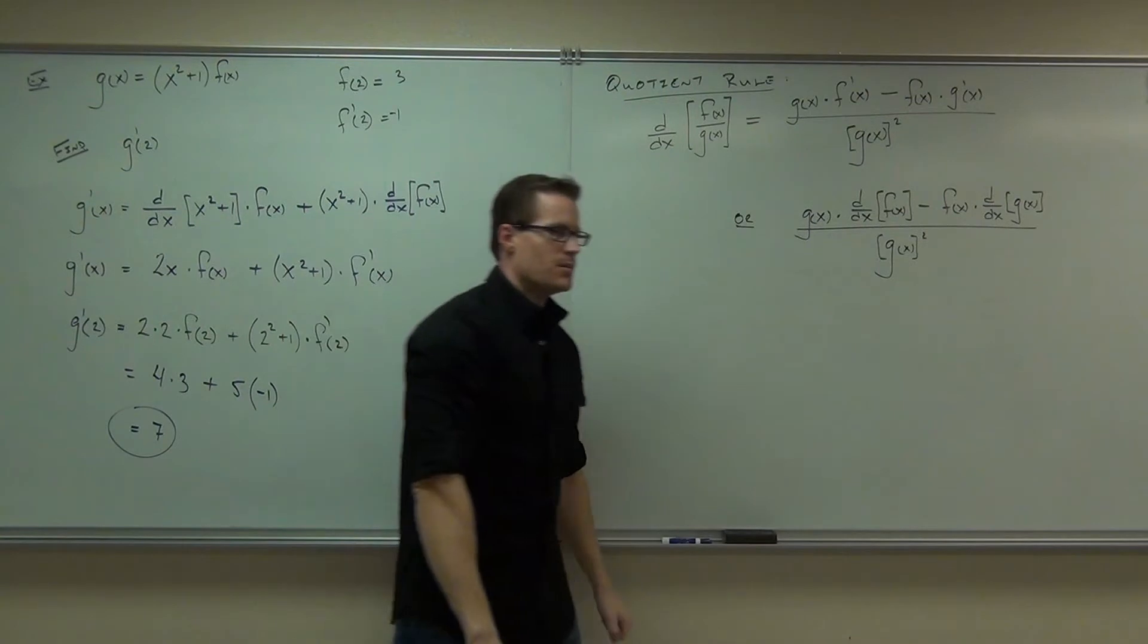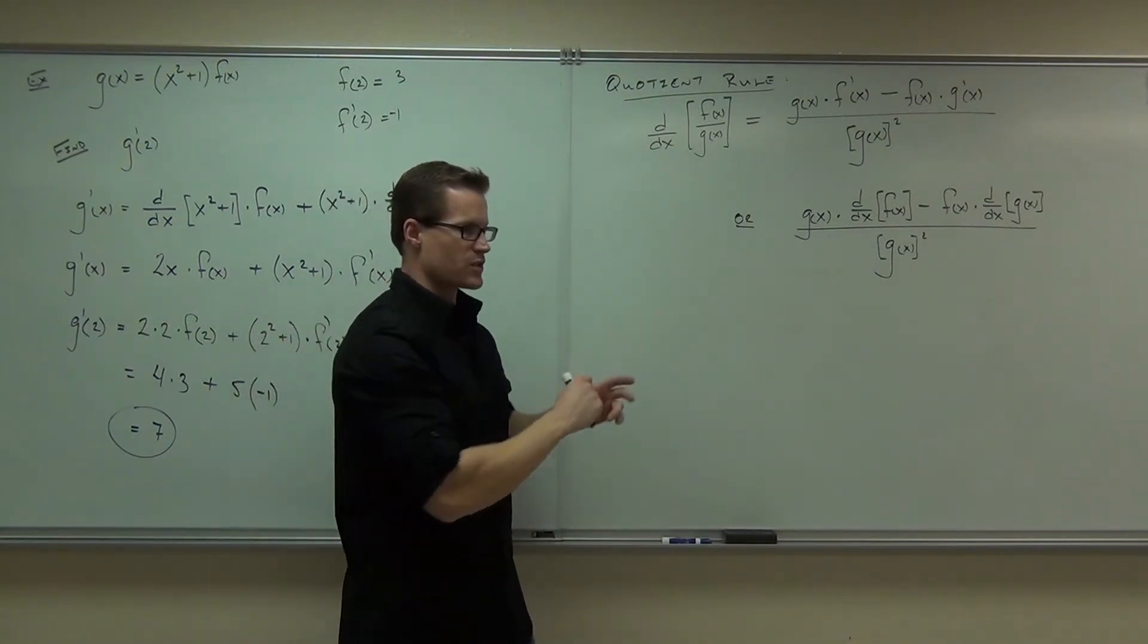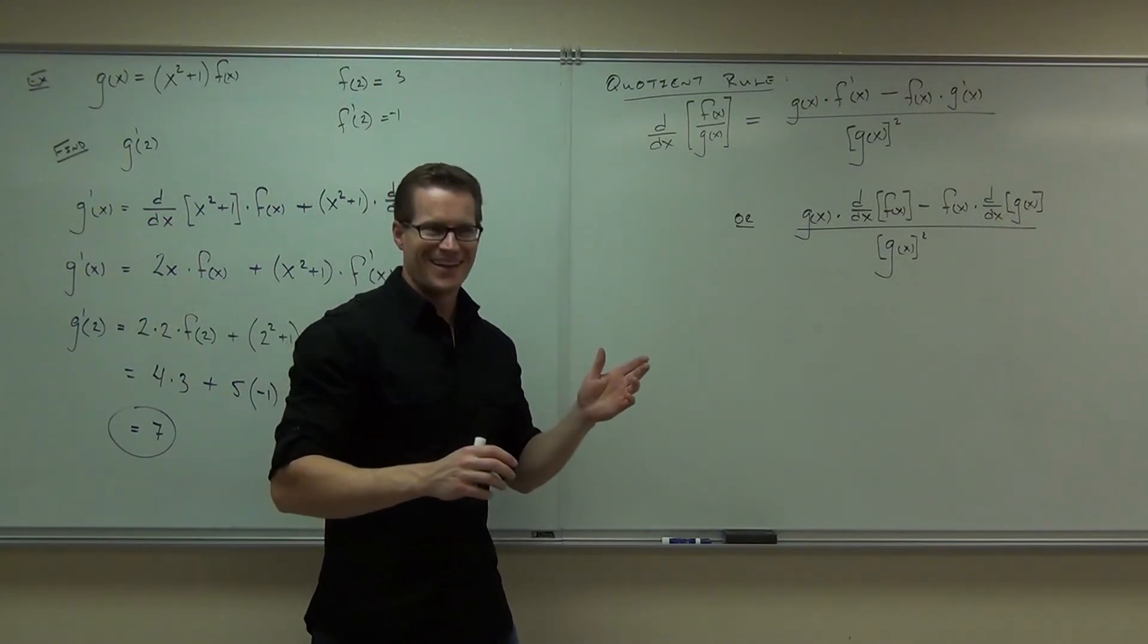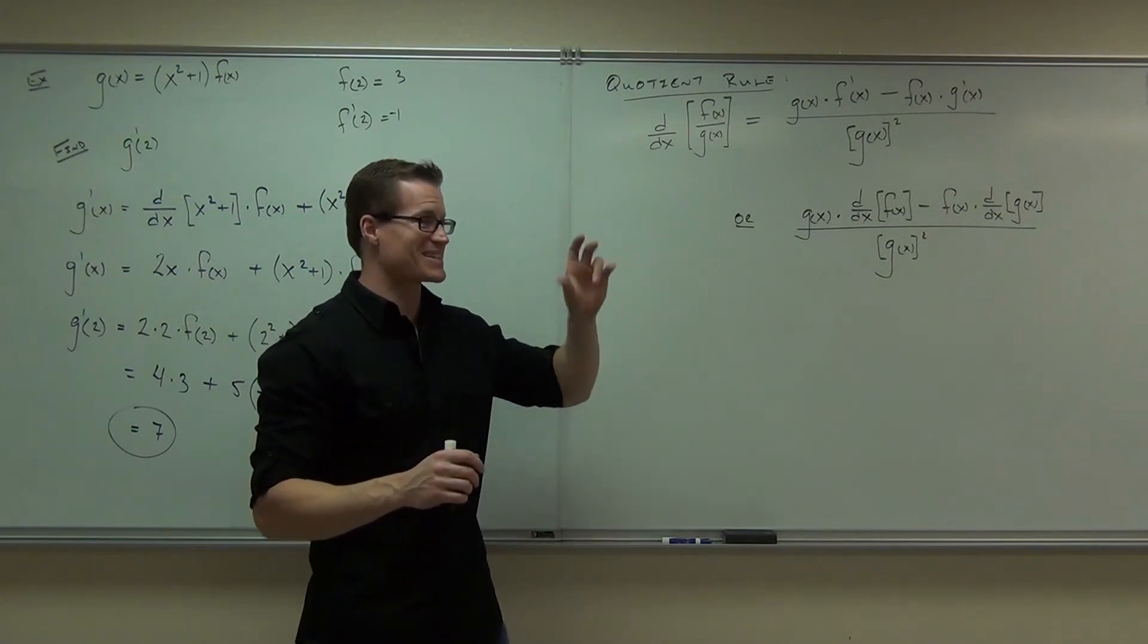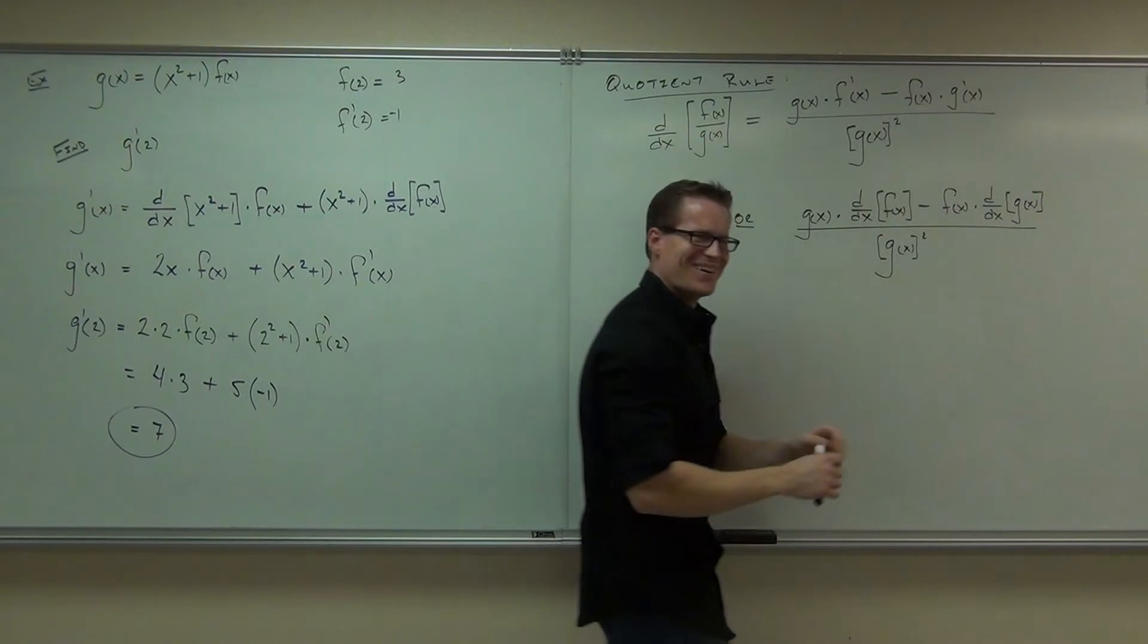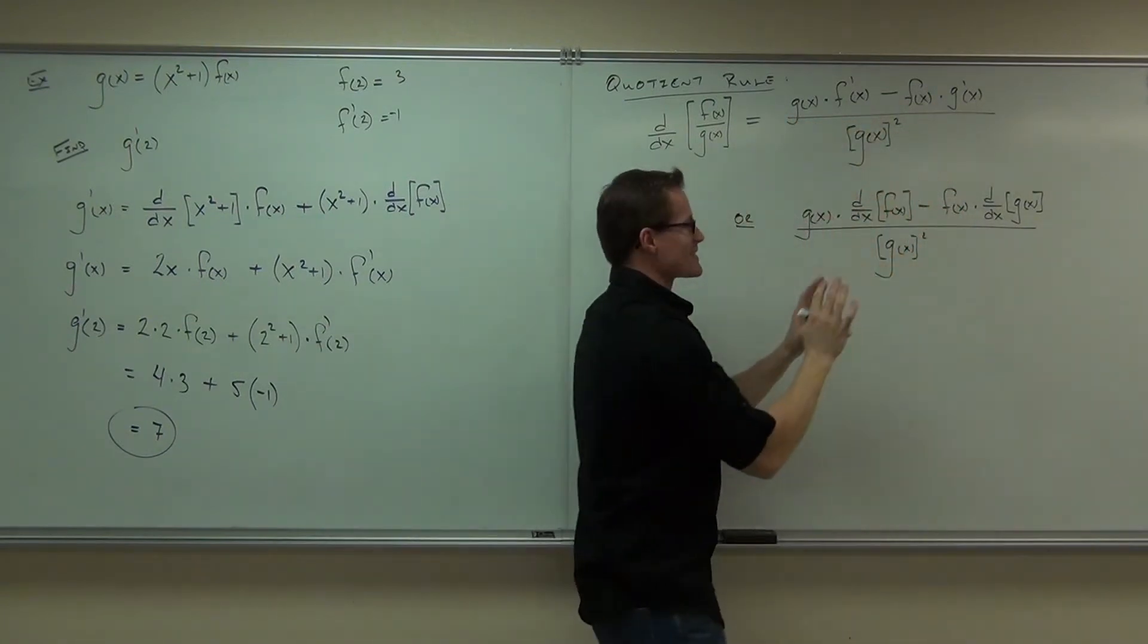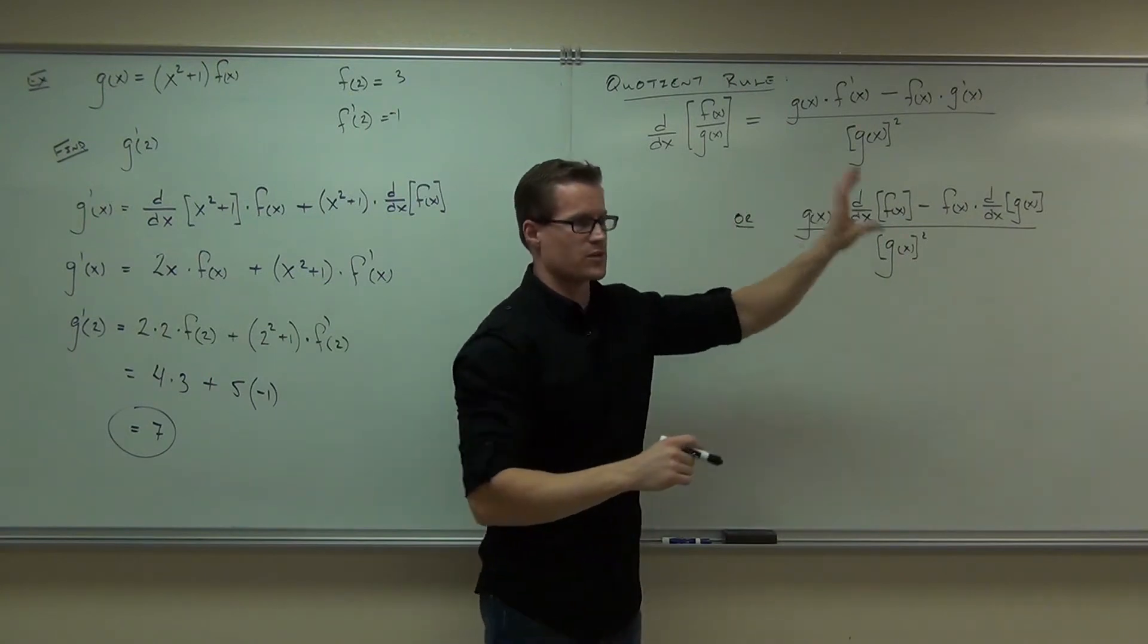Absolutely not. Because subtraction's not commutative like addition is. If you interchange those, it's five minus seven the same as seven minus five? I'm sorry, that's not even close to the same. If I interchange these two things, they're still not the same. You can't take the top times the derivative of the bottom minus the bottom times the derivative of the top. That's drastic.